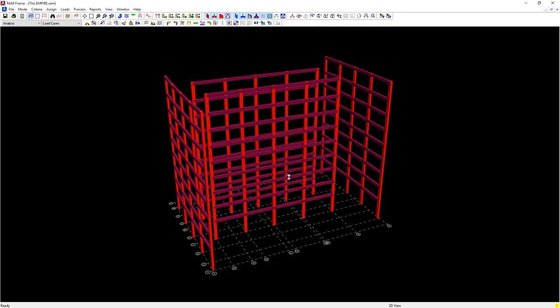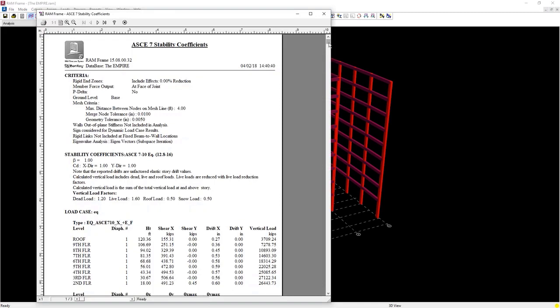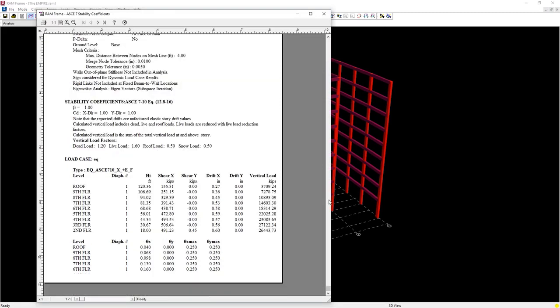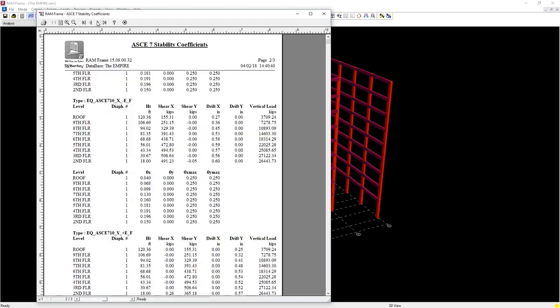Unlike theta, for q, the actual load factors are required, so ignore that message. Review the values of theta for each level, for each load case. ACI 318 indicates that if q is greater than 0.05, the structure is to be treated as a sway structure, which is the case here.